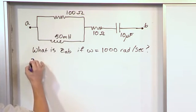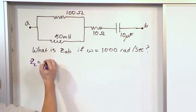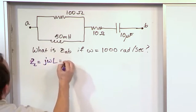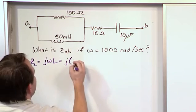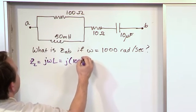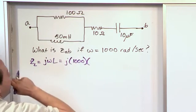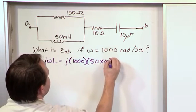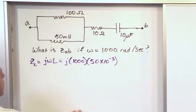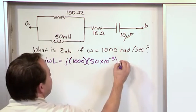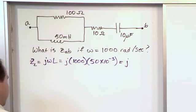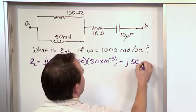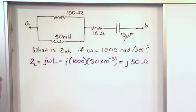So for the inductor, Z sub L is going to be jωL, which is j times ω of 1000 radians per second, and the inductance here is 50 millihenry, so 50 times 10 to the minus 3. And then I multiply these two together, and I get j50 ohm. So that's the impedance of the inductance.